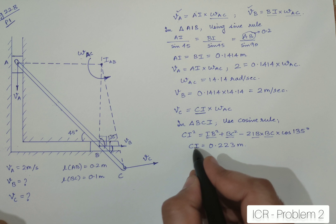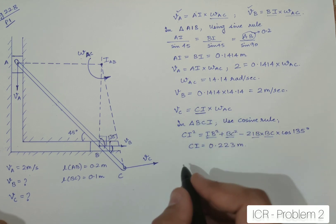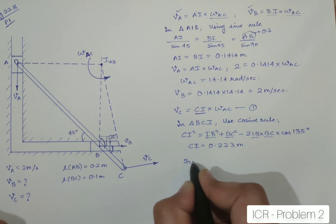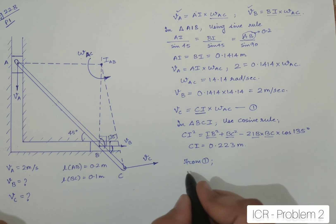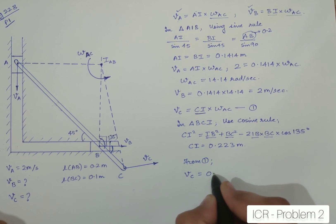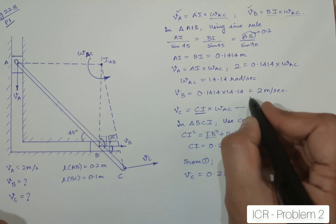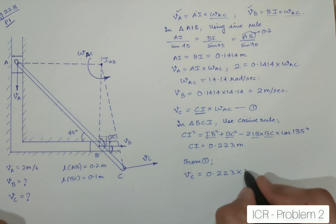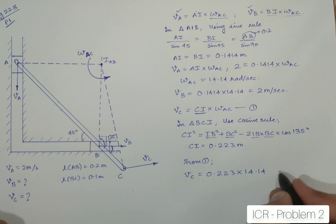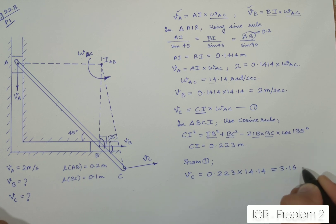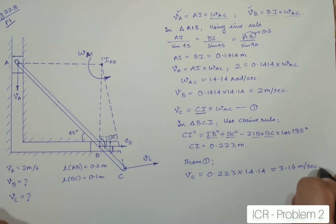Now using the CI I can find out omega or I can find out VC. So let me name this equation as 1. From 1, VC will be equal to 0.223 into omega AC which we just found out earlier was 14.14. Now this gives equal to 3.16 meters per second.